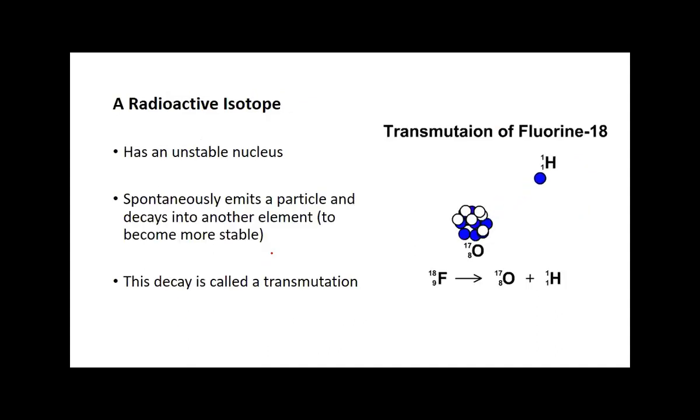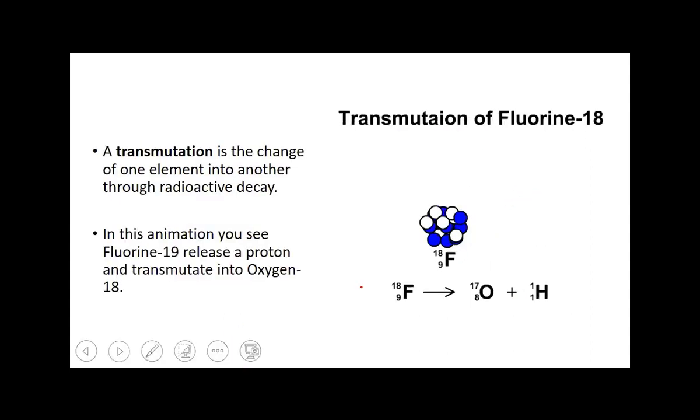We'll look at the different isotopes and this thing called a transmutation. When you have an element that breaks down and becomes another element and then a particle is given off, that's called a transmutation. So transmutation is one element becoming another element. In this case, fluorine is becoming oxygen and giving off hydrogen.